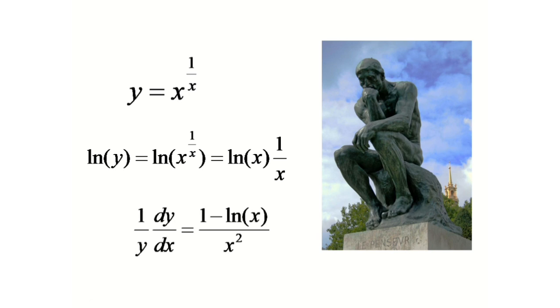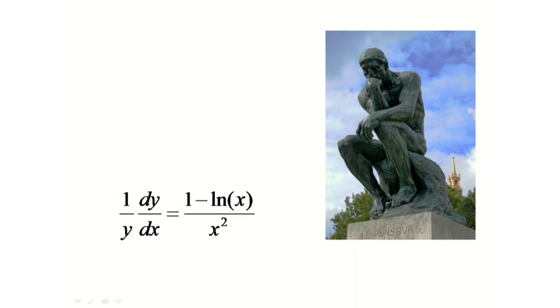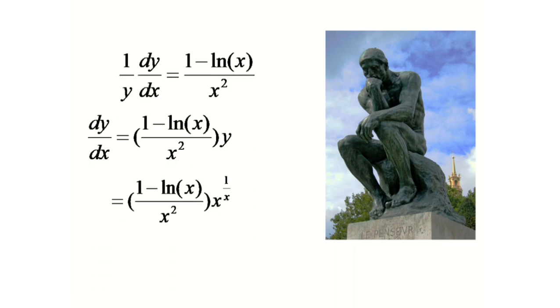If we take derivative on both sides, we will get 1 by y dy by dx equals to 1 minus ln x by x square. Multiply both sides by y to get 1 minus ln x by x square times x to the power 1 by x.